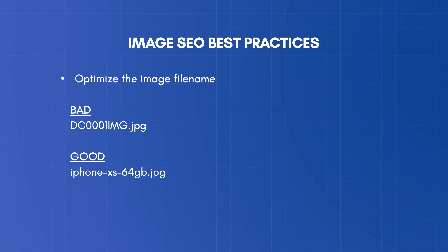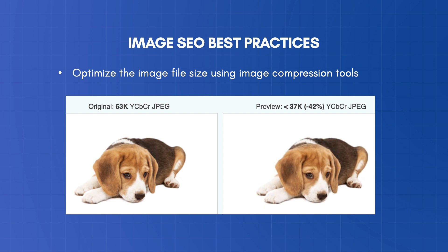The next thing to look at is the image file size. As a general rule of thumb, the smaller the image file is, the better. Large images take longer to load, and this can negatively impact the user experience, especially for mobile users. A good practice is to use image compression tools like ImageOptim, which can reduce the size of an image without losing quality. For example, look at these two images — they look identical to the eye, but the image on the right is 42% smaller than the other image.